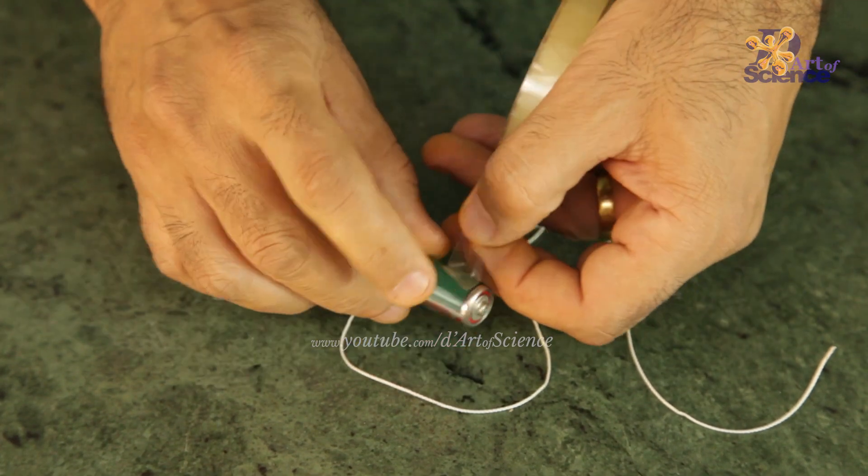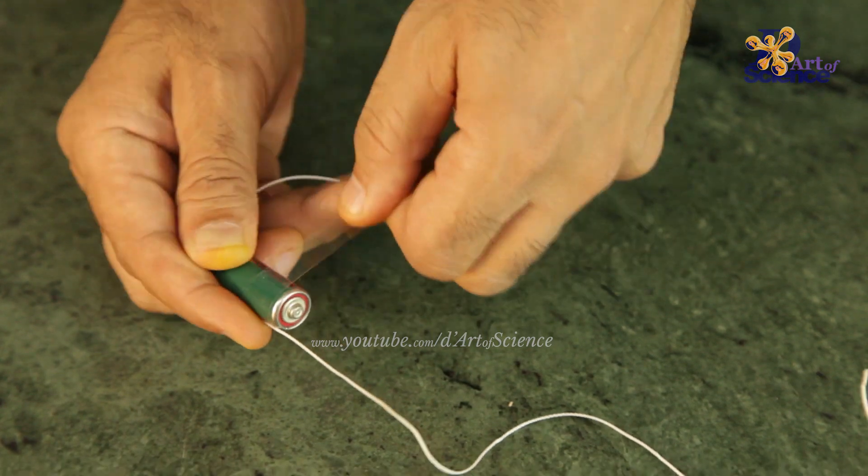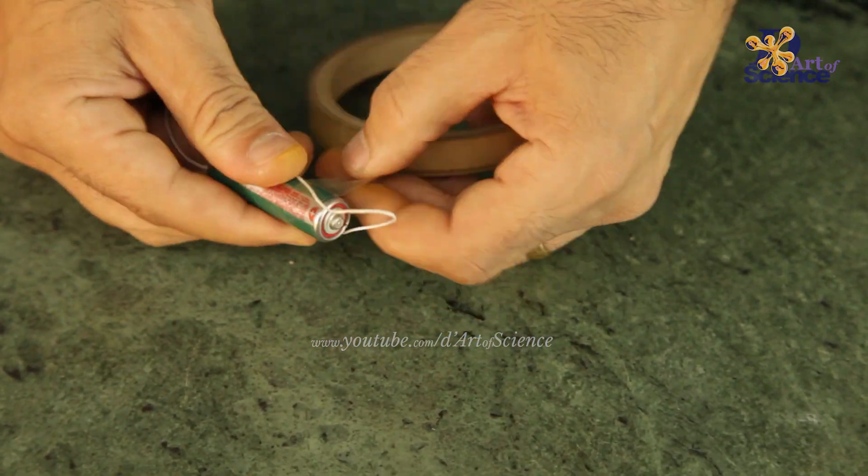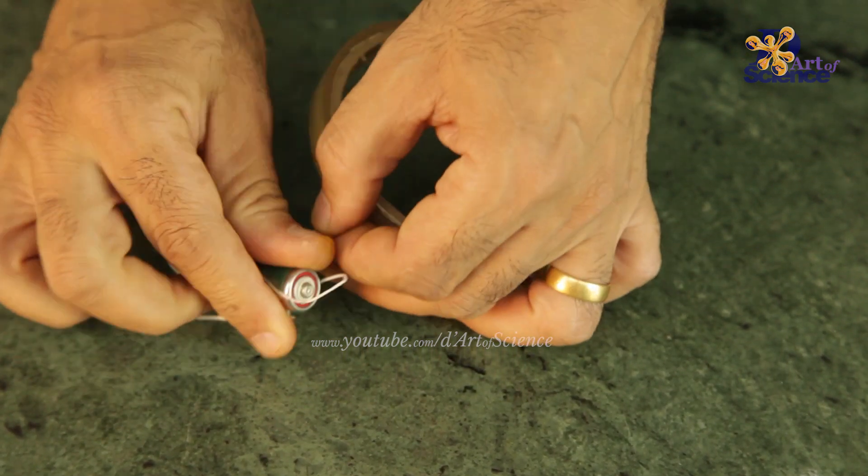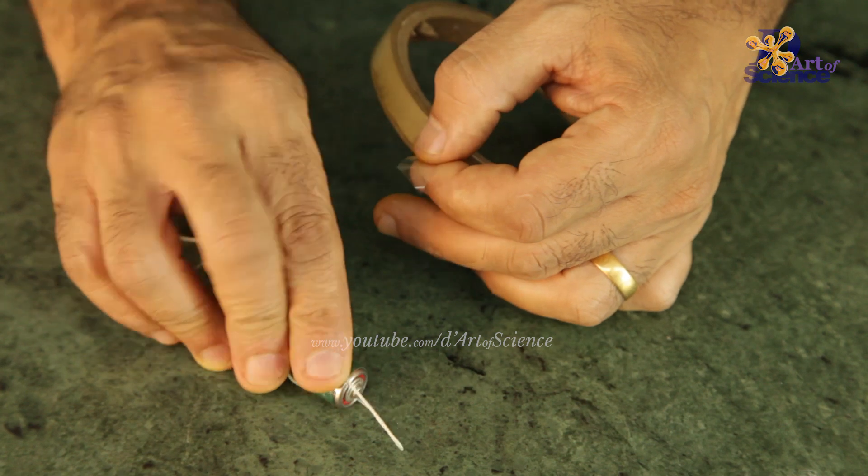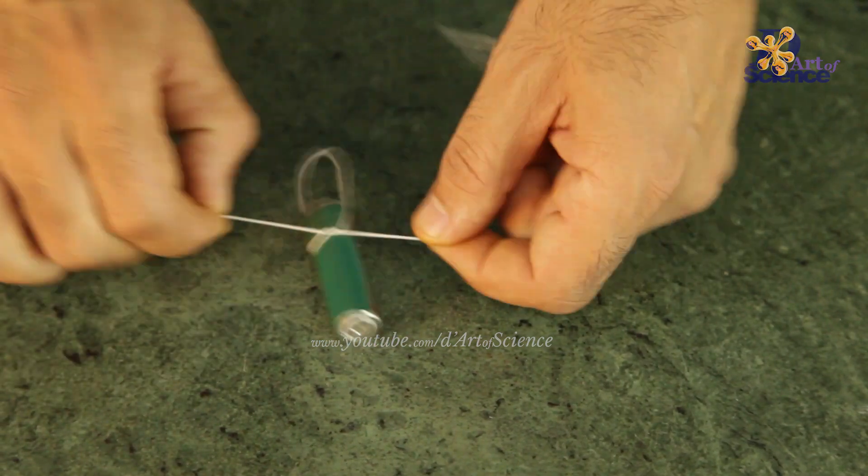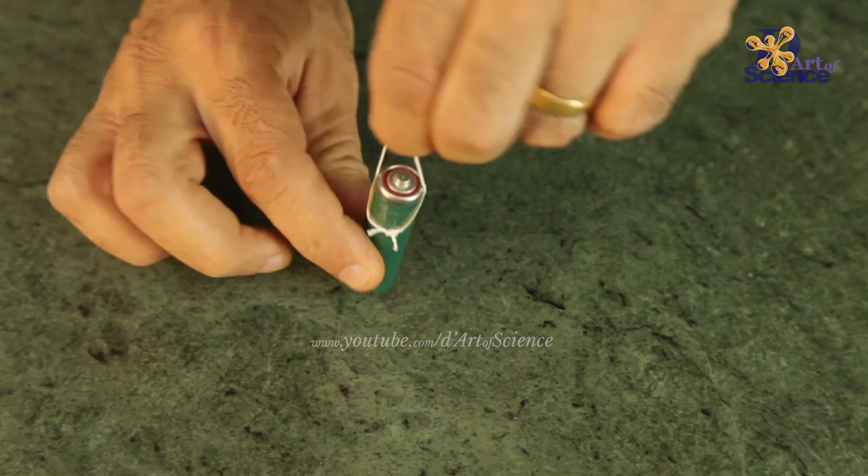Now we need something that's flat on top and cylindrical, and again it should be the same weight. A regular pencil cell suited perfectly. Tie the thread again in this way or any other way. And make a loop. The extra thread can be knotted and cut off and this is ready too.